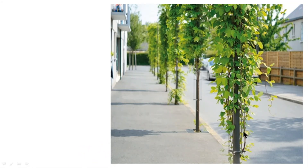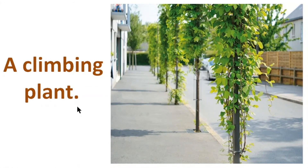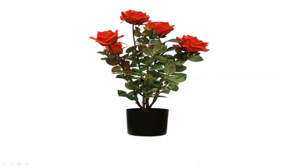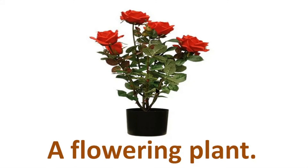These plants are climbing from bottom to top, so this plant is a climbing plant. And this is very easy — this is a flowering plant. There is a flower in this plant, so we can say this plant is a flowering plant.